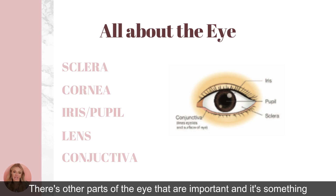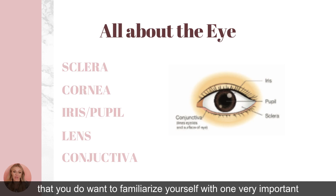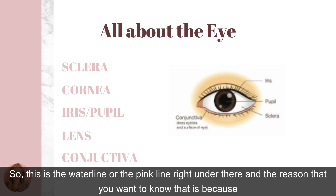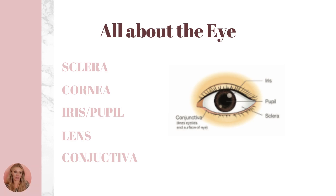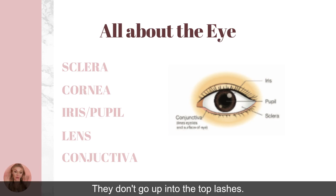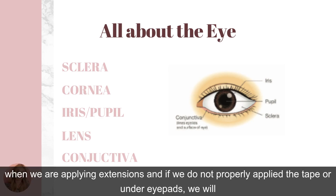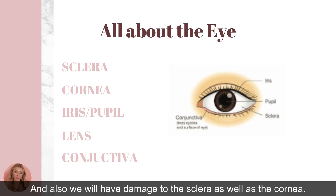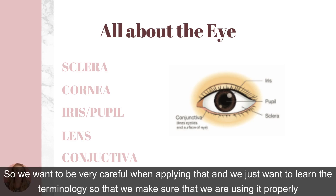One very important part of the eye you want to know is the conjunctiva — the water line or pink line right underneath. The reason you want to know this is because when we're doing eyelash extensions, we use tape or collagen/gel eye pads to cover the bottom lashes so they don't go up into the top lashes during application. If we don't properly apply the tape or under-eye pads, we will cause damage to the conjunctiva, the sclera, and the cornea, so we want to be very careful.